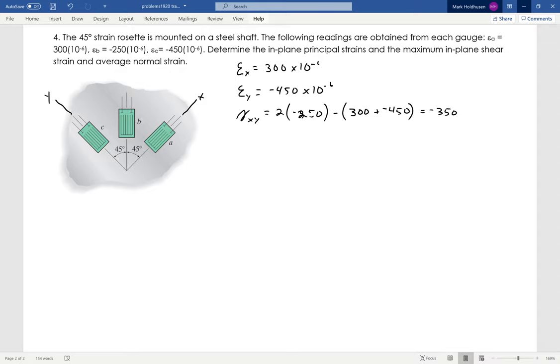This gives me my state of strain, because all those values given are strains. I need to find the shear strain, so I can directly find the x and y, and then I find the shear strain given the equation from the book for rosettes.